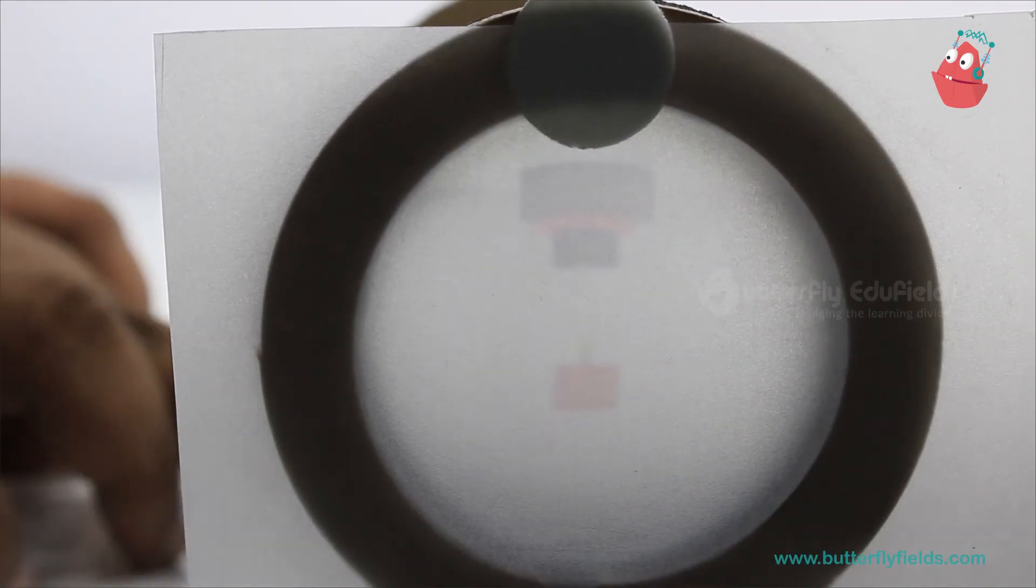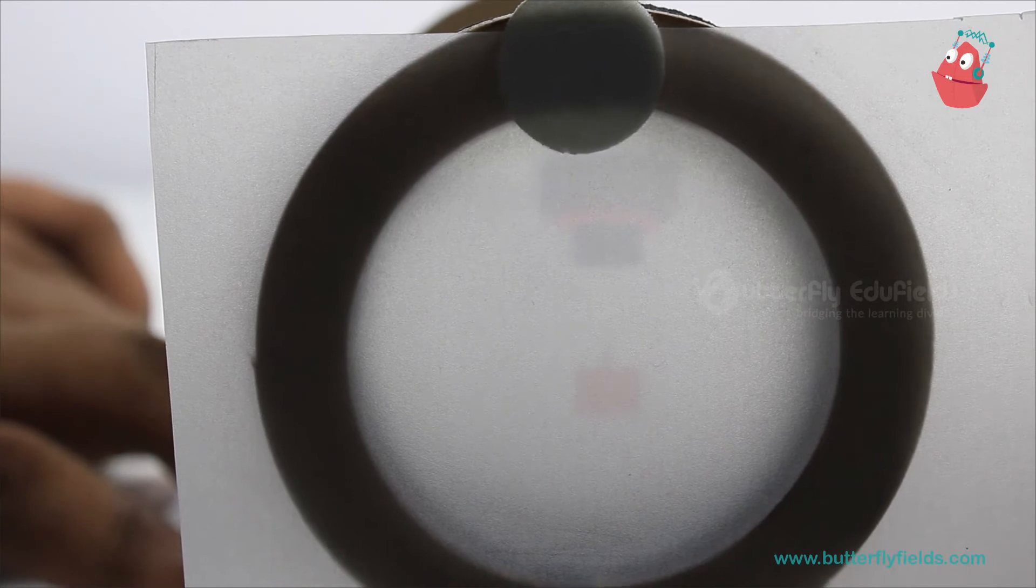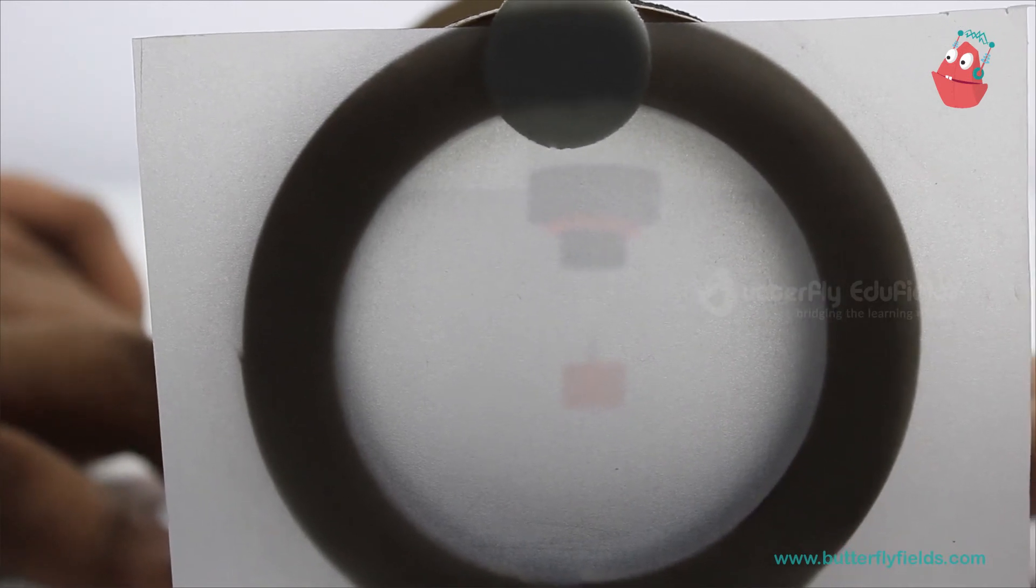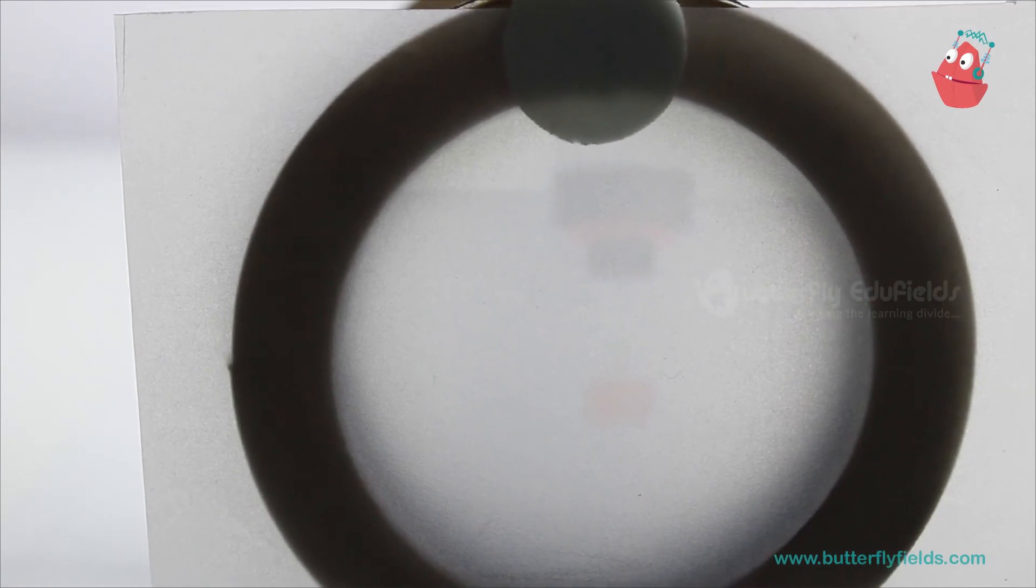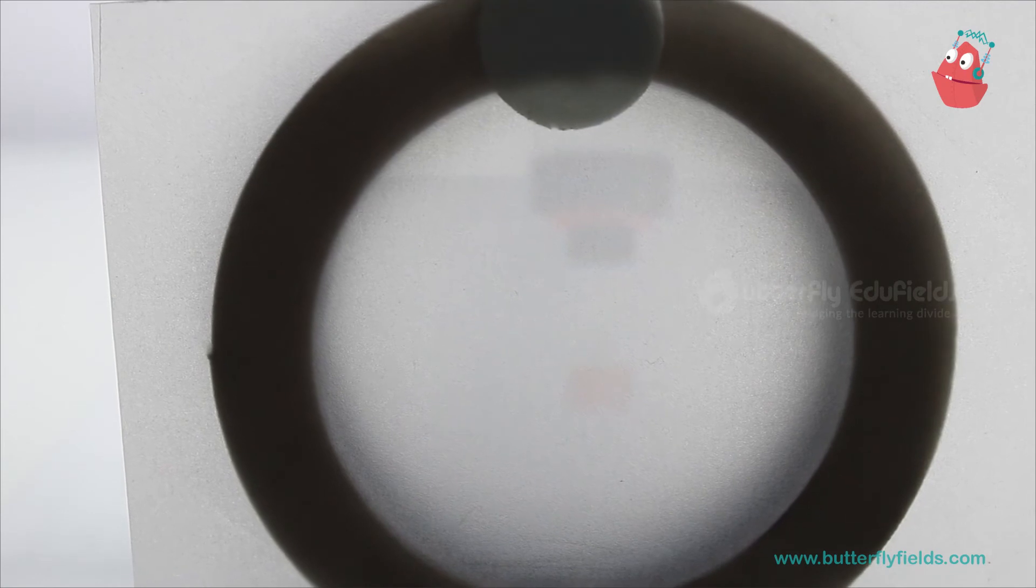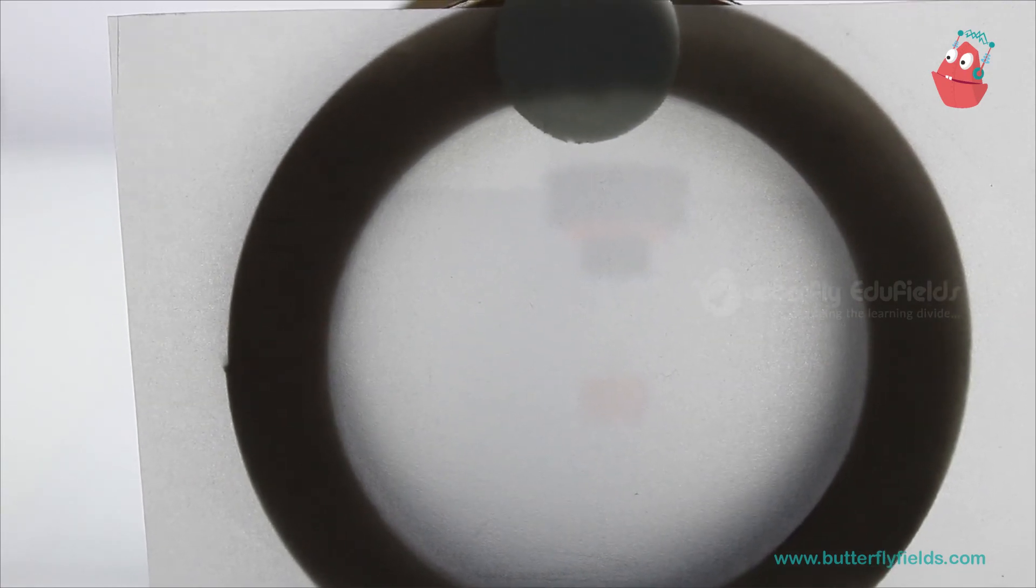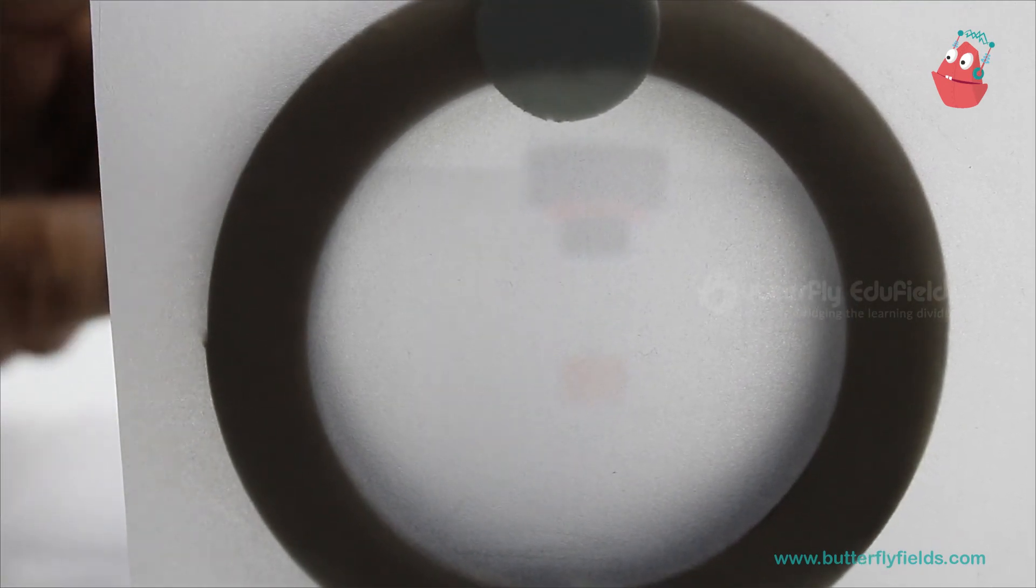So as you can see here, the image on the screen is inverted. Now here, this screen is the retina of our eye. It acts as the retina of our eye where the inverted image is formed because of the crystalline lens here, that is our lens pop.